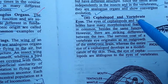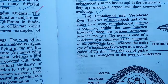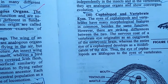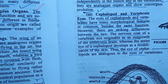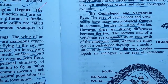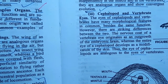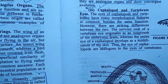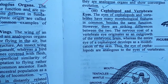Next we have the cephalopod and vertebrate eye. The eye of cephalopods and vertebrates have many morphological common features. But the eye of vertebrates has developed from the ectoderm part of the brain, while in cephalopods it is originated from the skin. This also represents an analogy.